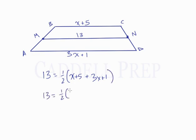So let's combine like terms. So x and 3x is 4x. 5 plus 1 is 6. So let's find out what half of this is. Let's distribute the 1 half. 1 half times 4x. So 1 half of 4 is 2. We have 2x. Half of 6 is 3.